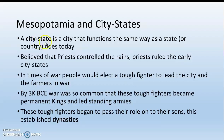Mesopotamia is made up of city-states. A city-state is a city that functions the same way as a state or country does today. Mesopotamia is made up of lots of little tiny countries that are really just cities. The people in these city-states believe that priests control the rains — and since you need water to farm, priests are the ones who rule the early city-states. In times of war, people elect a tough fighter to lead them. By 3000 BCE, these wars are so common that tough fighters become permanent kings and lead standing armies.